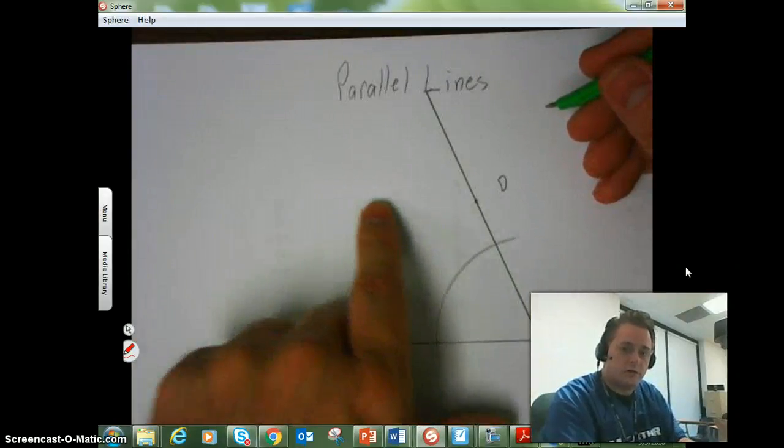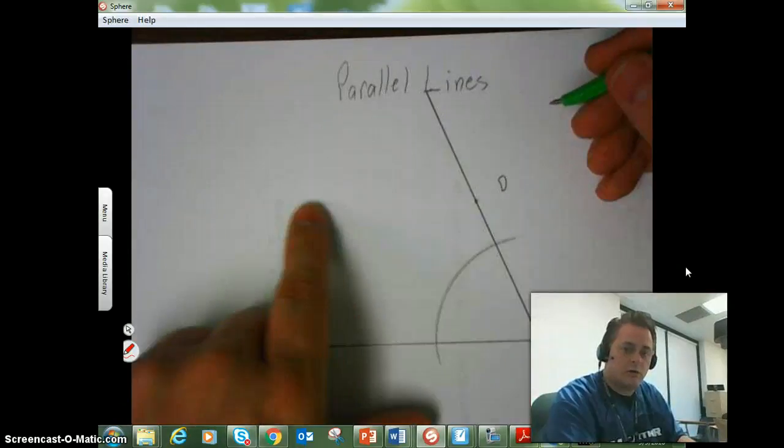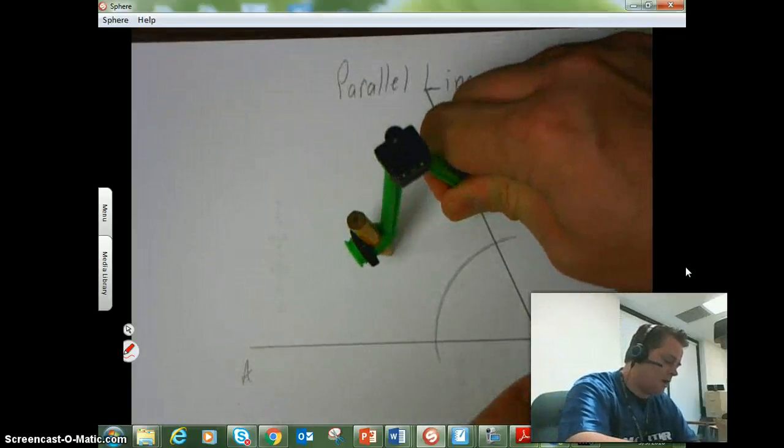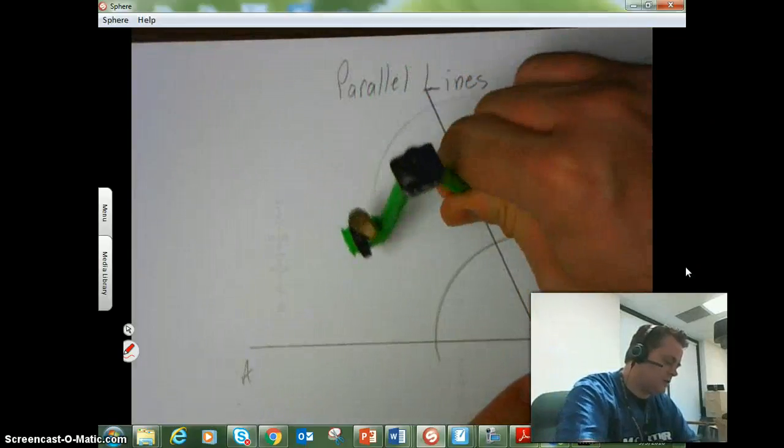And so, somewhere, side to side, I need another point in order to be able to draw my line. So I'm going to make this arc a little bit longer than it probably needs to be.